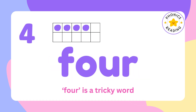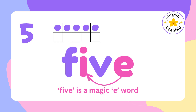4 is again a tricky word. So we learn it as F-O-U-R: 4. 5 is a magic-I keyword. We read it as F-I-V-E: 5. The letters I and E together are making the sound I. F-I-V-E: 5.